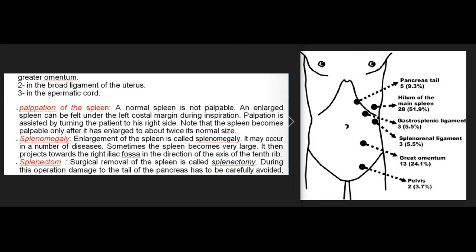Clinical notes — Palpation: a normal spleen is not palpable. An enlarged spleen can be felt under the left costal margin during inspiration; palpation is assisted by turning the patient to the right side. The spleen becomes palpable only after it has enlarged to about twice its normal size. Splenomegaly: enlargement of the spleen may occur in a number of diseases; when very large, it projects towards the right iliac fossa in the direction of the axis of the 10th rib.